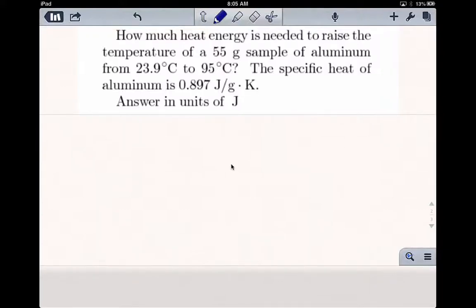How much heat energy is needed to raise the temperature of a 55 gram sample of aluminum from 23.9 degrees Celsius to 95 degrees Celsius? The specific heat of aluminum is 0.897 joules per gram Kelvin.